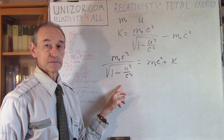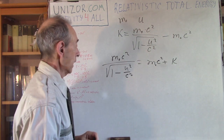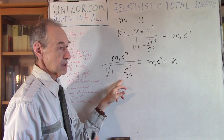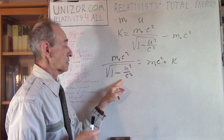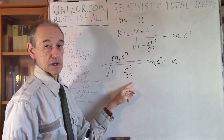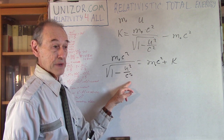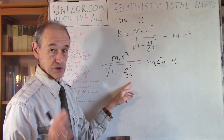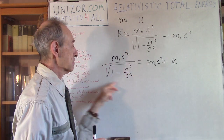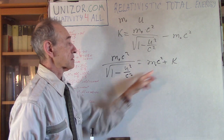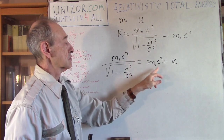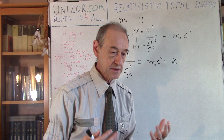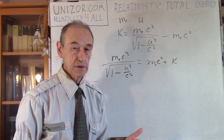The other term, K, depends on speed. As speed increases, u/c gets closer and closer to one, the square root term approaches zero, and the whole expression increases toward infinity — because K is increasing to infinity while the rest energy term stays constant.